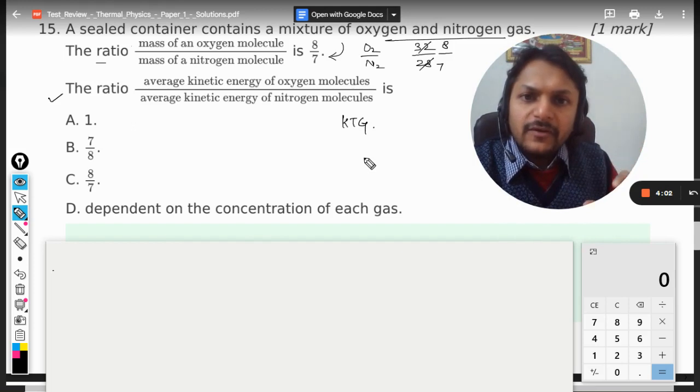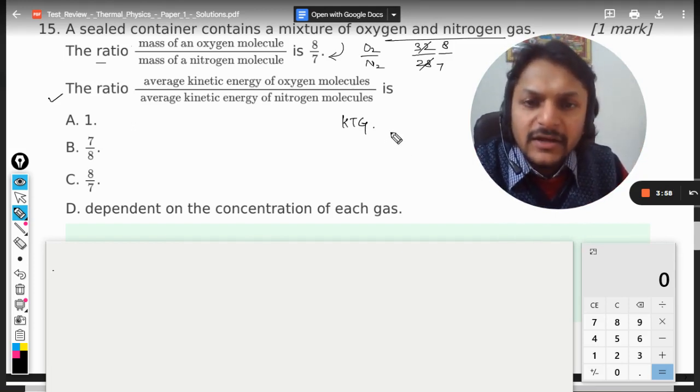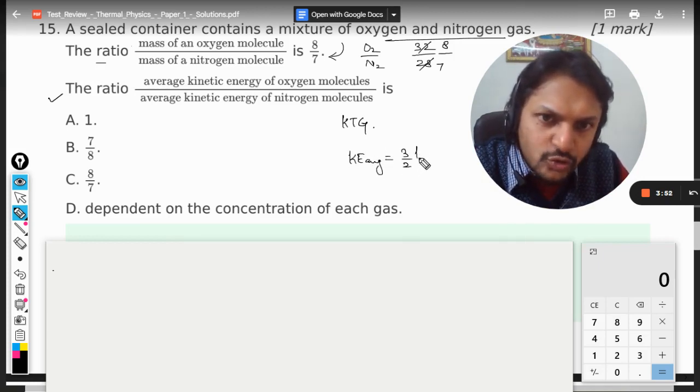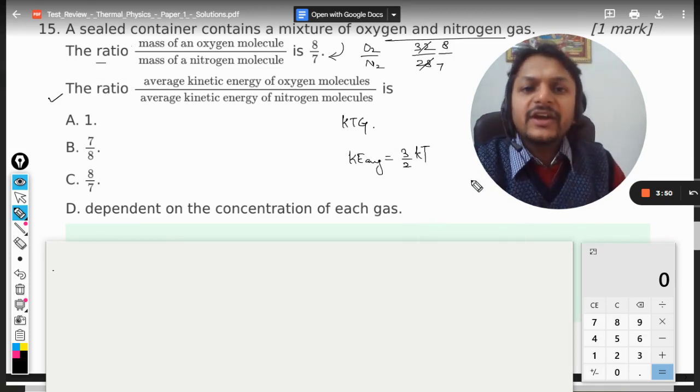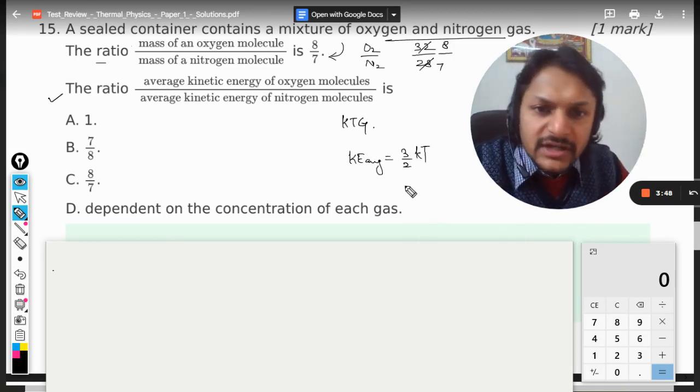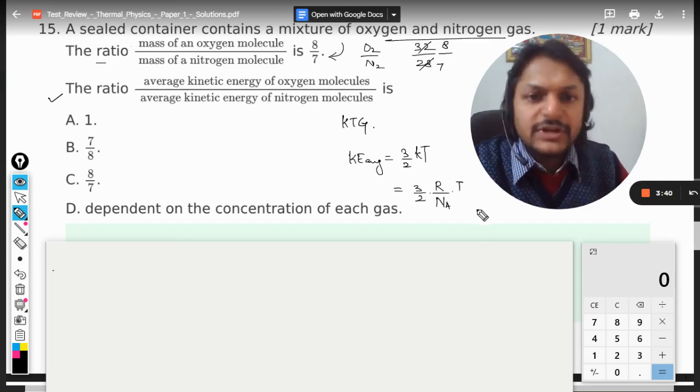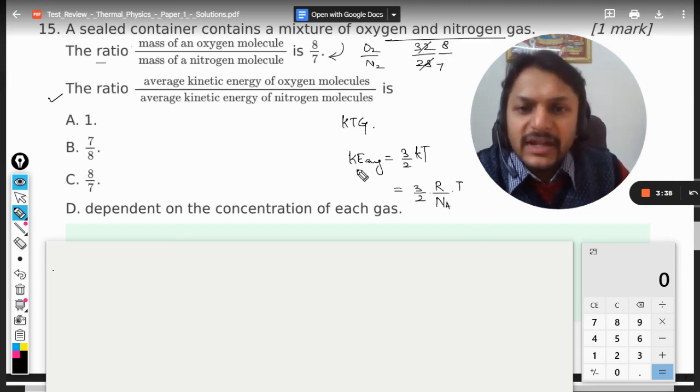So for ideal gases everything is same, and we use a formula for average kinetic energy. And this formula is 3/2 kT, where k is the Boltzmann constant, and Boltzmann constant has a constant value which is equal to R divided by Avogadro's number into absolute temperature.